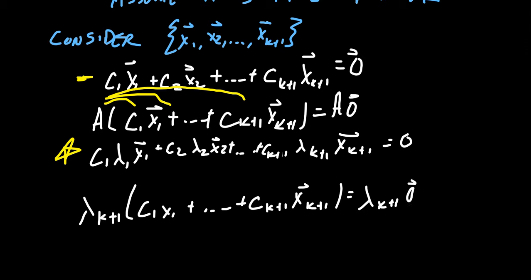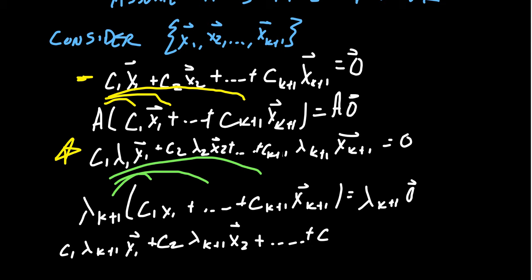On the left-hand side, we can distribute the lambdas. So we get these lambdas distributed to all the pieces. And so we're going to get C1 lambda K plus 1 X1. We're going to end up with a C2 lambda K plus 1 X2. And this will then continue on until you get to the end. C K plus 1, lambda K plus 1, X K plus 1. And this equals the zero vector.